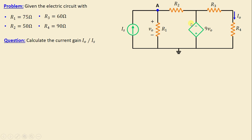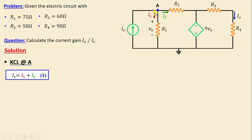The question is to calculate the current gain IO over IS. Let's move on to the solution — we are going to apply Kirchhoff's laws. First, let's select arbitrary currents for each branch: I1 is the current through R1, and I2 is the current through R2. Applying Kirchhoff's current law at node A, we can write IS = I1 + I2. We'll call this Equation 1.